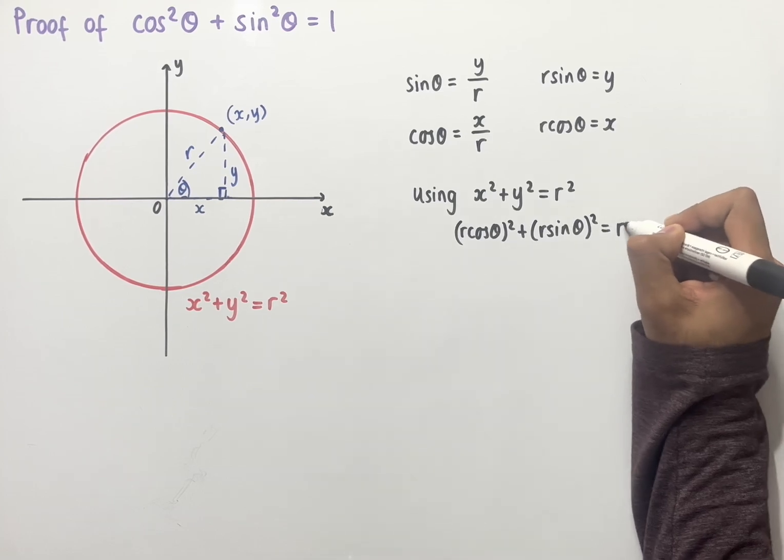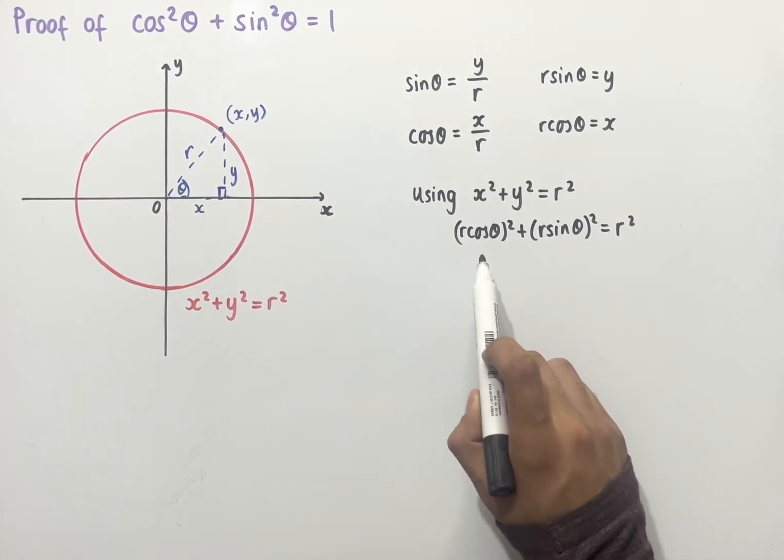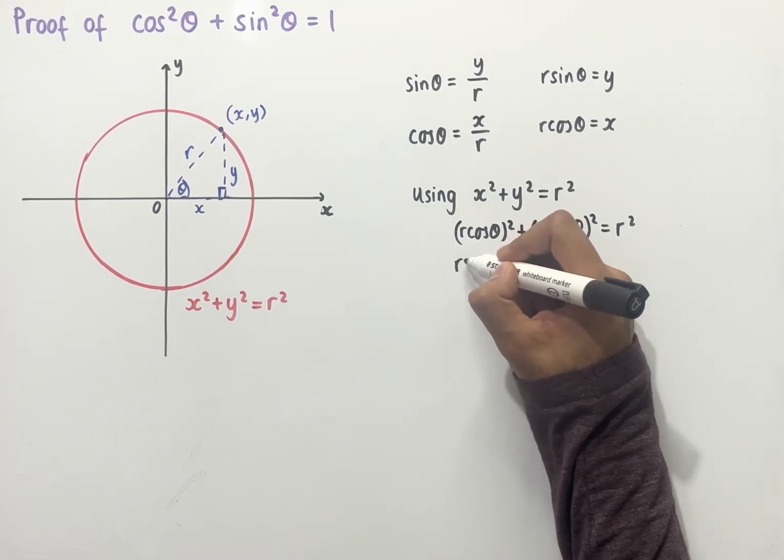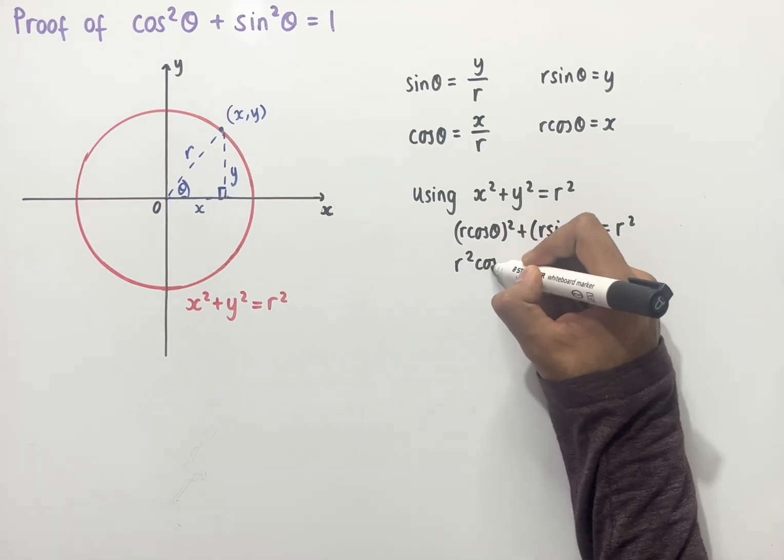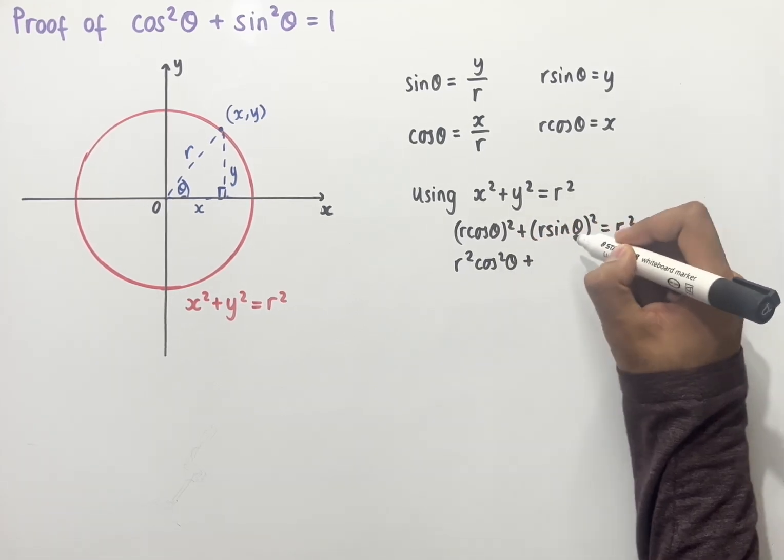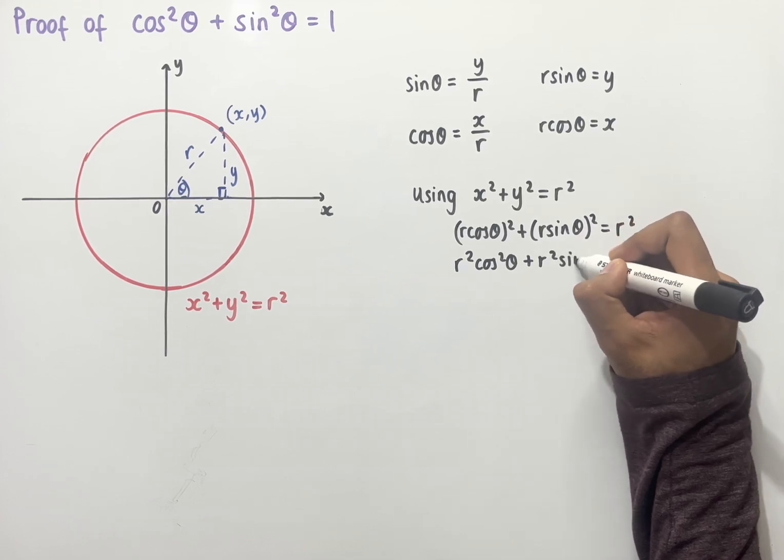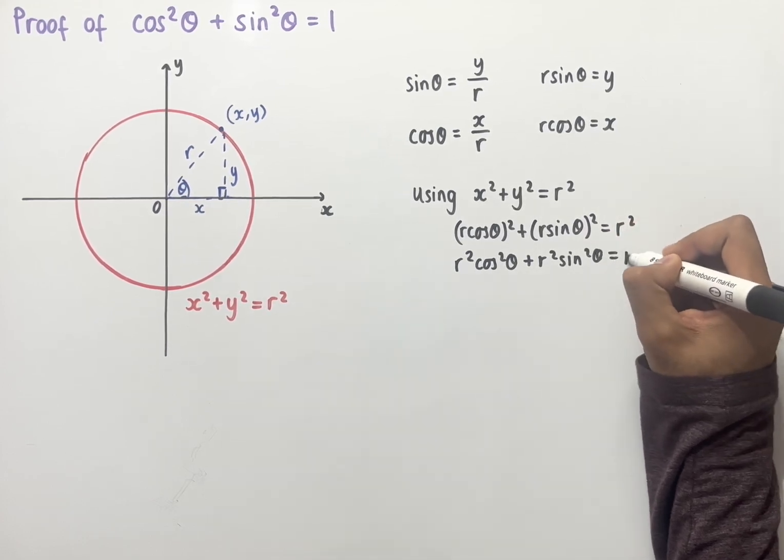If we now expand the brackets out, r cos theta all squared is the same as r cos theta times r cos theta, which becomes r squared cos squared theta. And then likewise, r sin theta all squared becomes r squared sin squared theta, and then this all equals r squared.